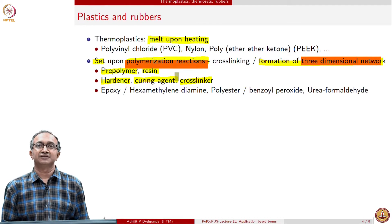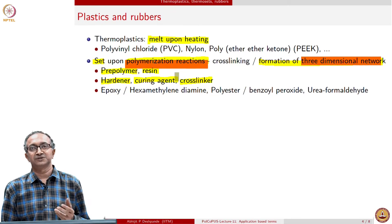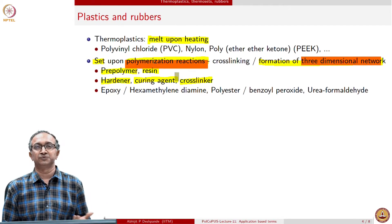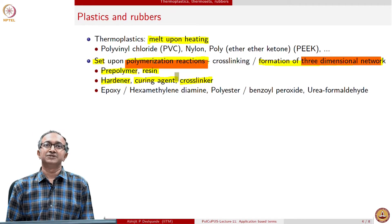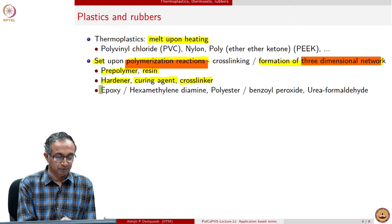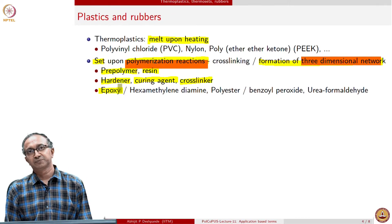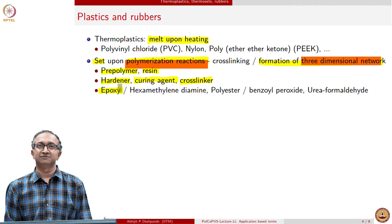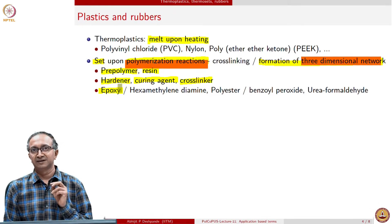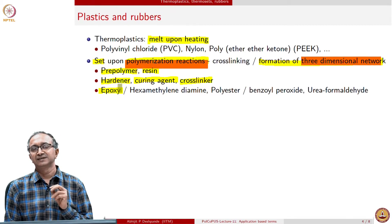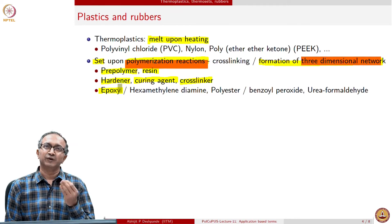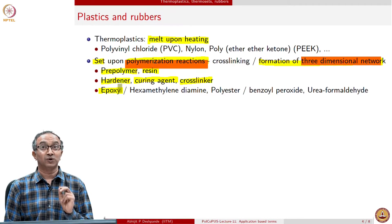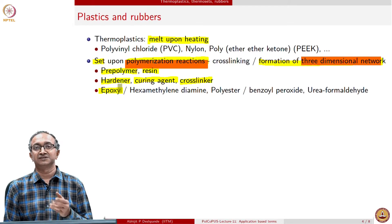We take the pre-polymer or resin and cure it so that it becomes solid. Therefore, the crosslinker is called a curing agent and is also a hardener, because it takes the material from a liquid pre-polymer or resin to a solid thermoset. Prominent examples of thermosets include epoxy — a fantastic adhesive for bonding dissimilar materials; there are not many adhesives as good as epoxy. The answer to why it is a good adhesive lies in looking at the molecular structure and the interactions epoxy can have with the surfaces it will bind.